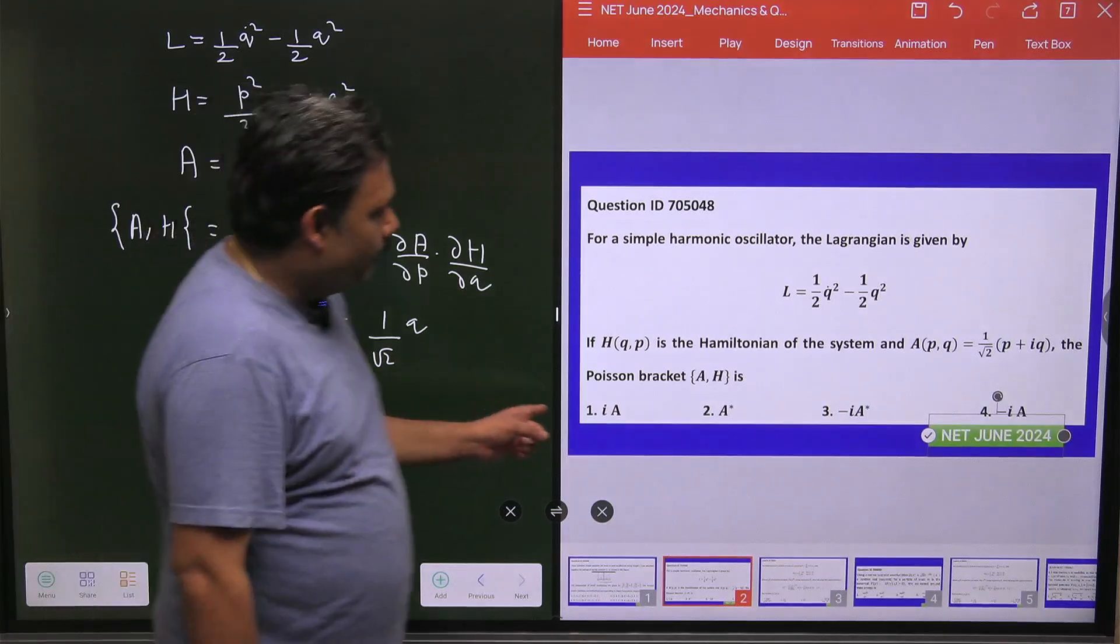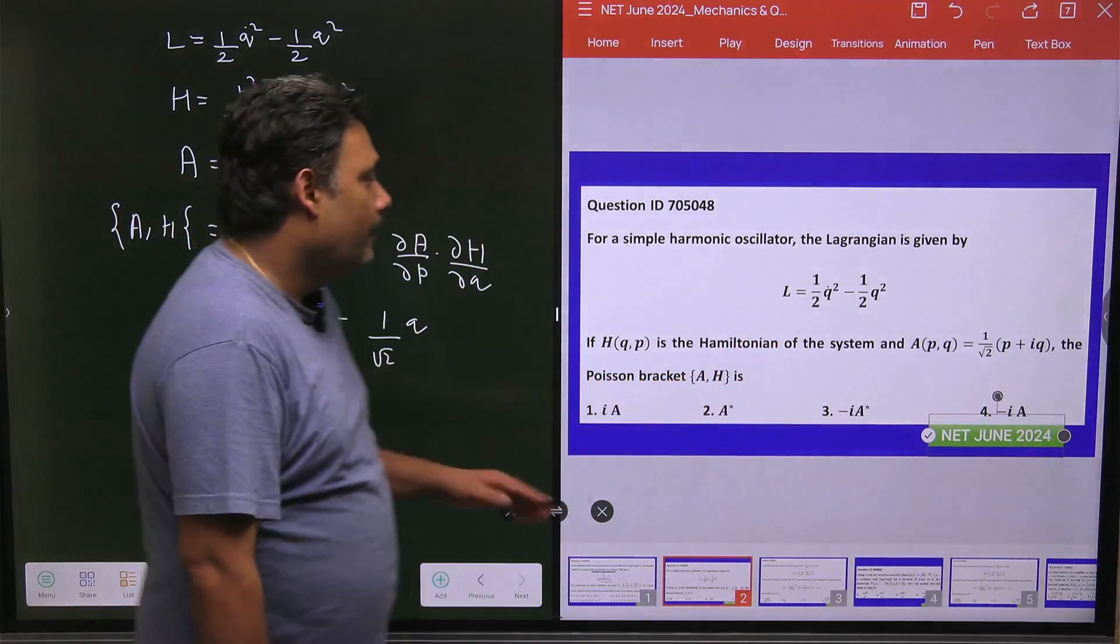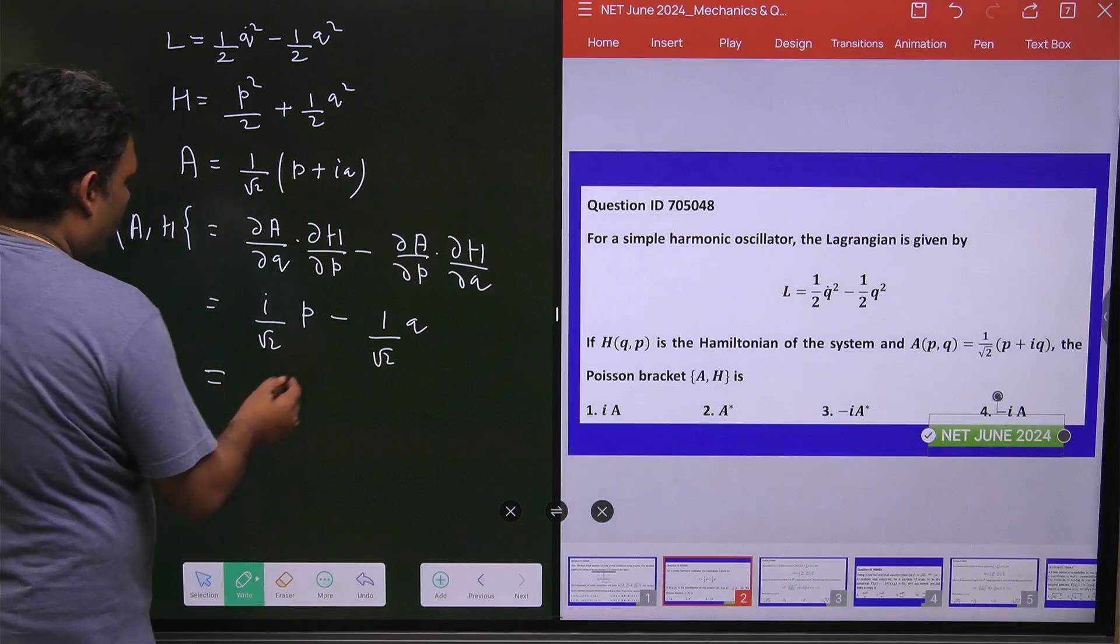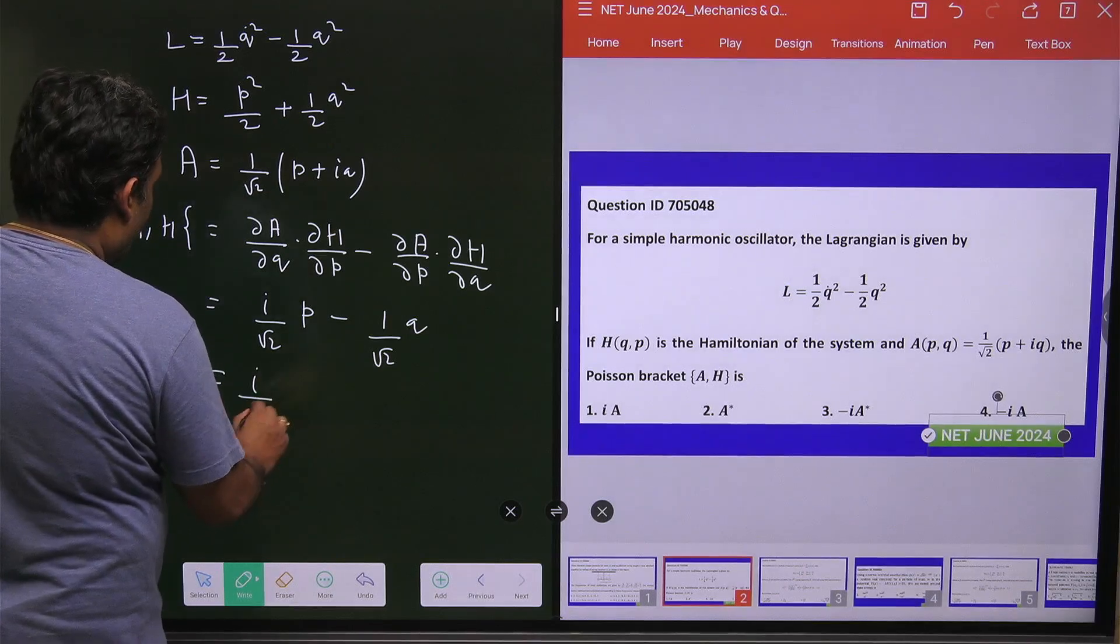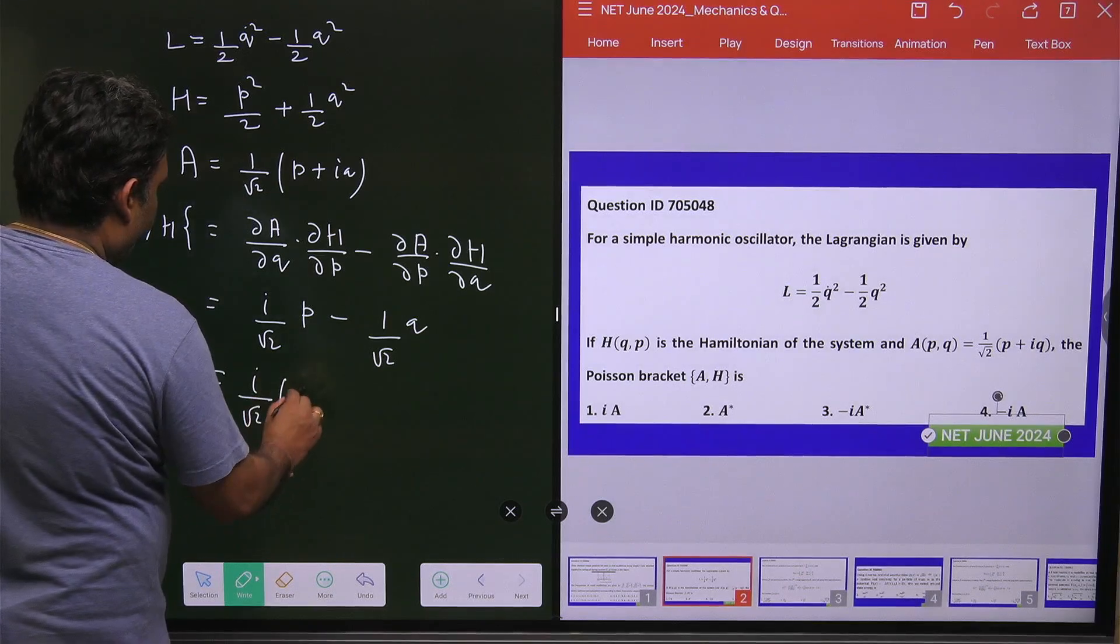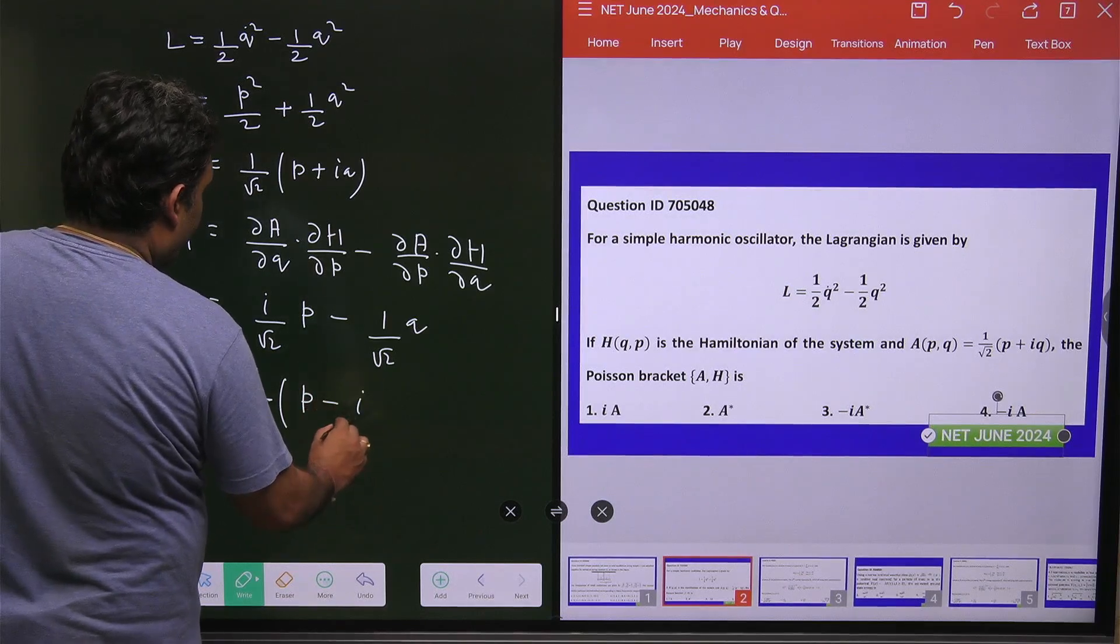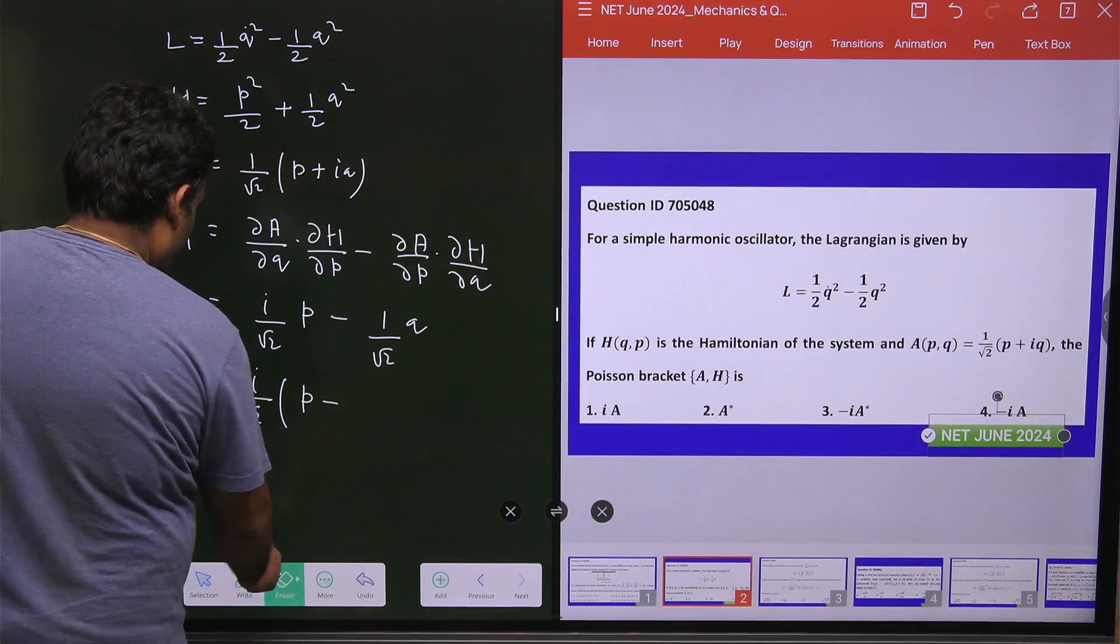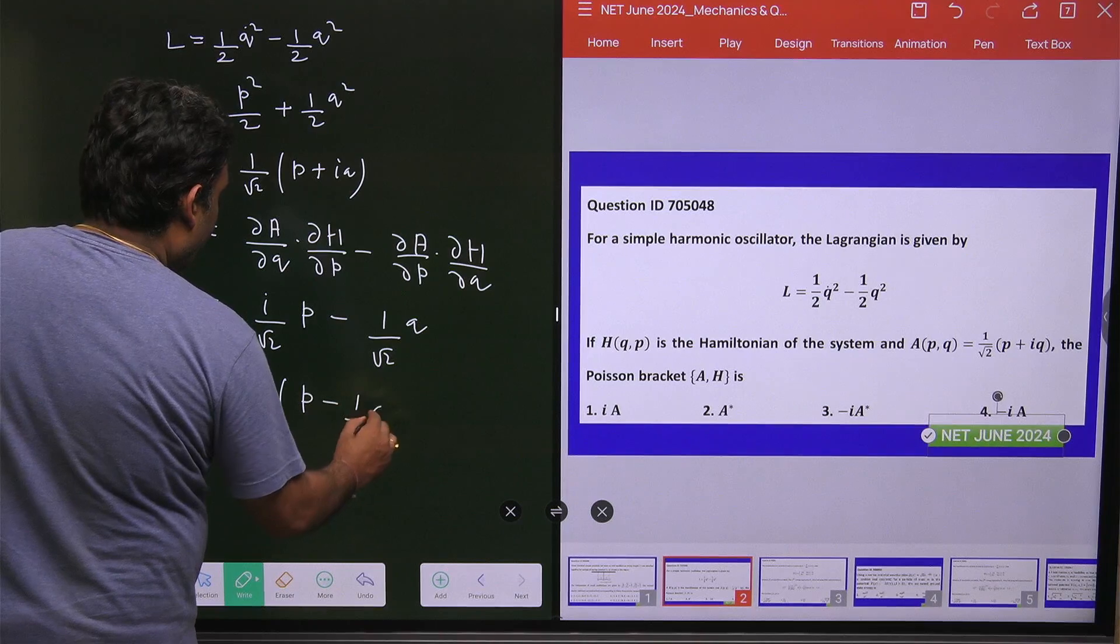We have to write the answer as a function of A. How we will go for this? This value is equal to, we can take i/√2 common, and that value is p minus, sorry, this will be p - 1/i × q.